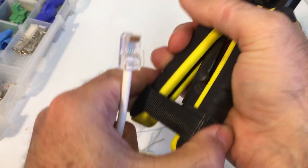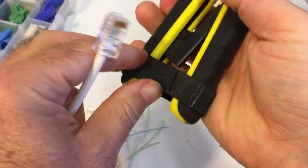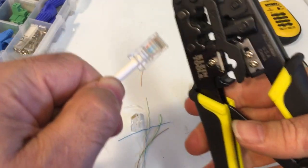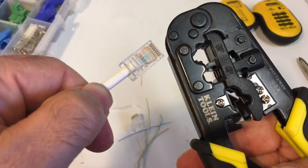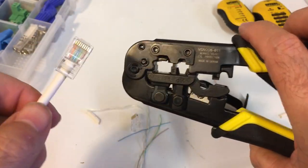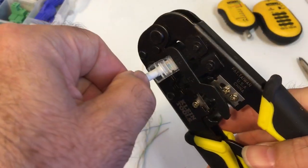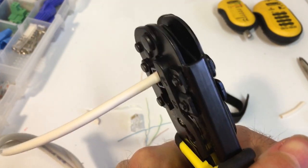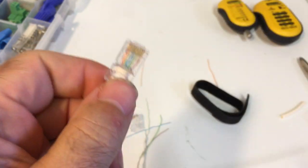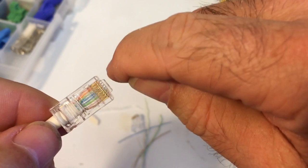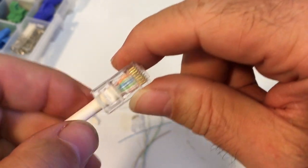Alright, so take your modular crimper, whatever type you have. Again, these are something you can get online. You can get them also at the big box hardware stores. You put it into the spot for the 8 crimp. So this is an 8, a 6, a 4. So I'll put this in that spot right there. I'm going to crimp down and go as far as it can go. And then I let up, and now it's crimped.